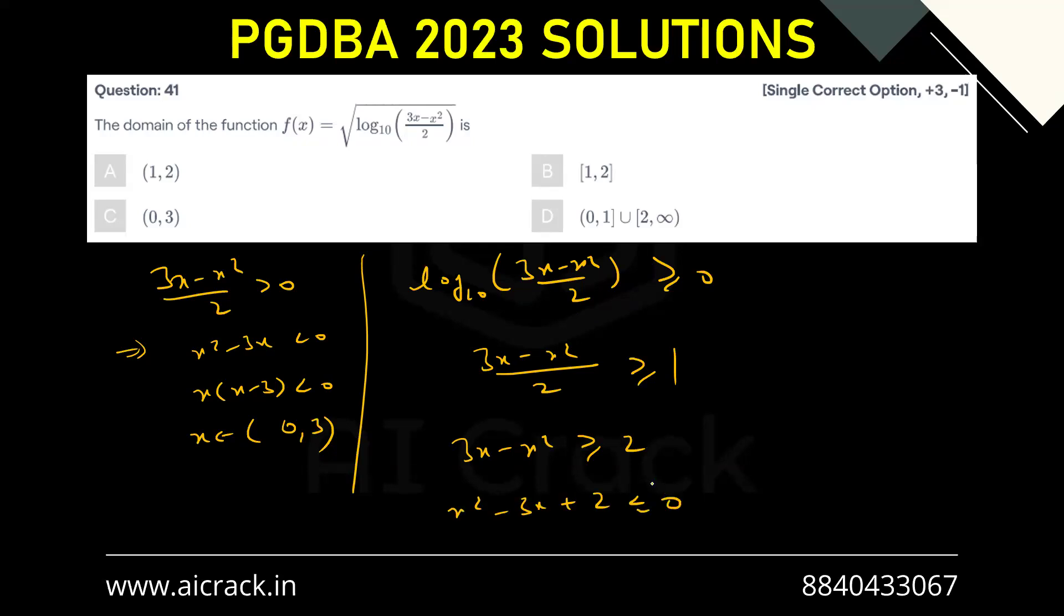If you solve this, we'll be getting (x minus 1)(x minus 2) should be less than or equal to 0. That gives us x belongs to [1, 2] closed interval.